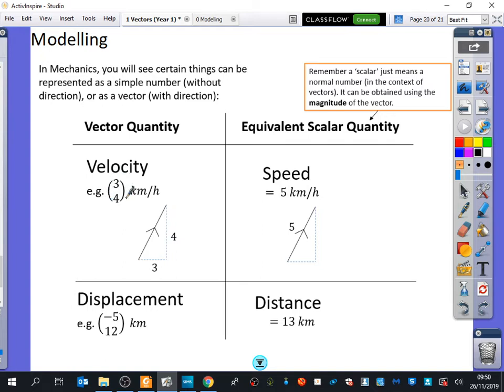which would be 3² + 4², square rooted, which we know is 5. The speed is just 5 kilometers per hour. So speed is a scalar quantity that does not have direction. Velocity is a vector quantity that does have direction.